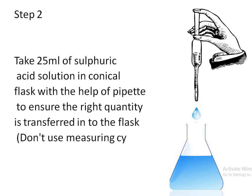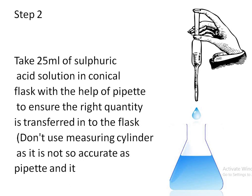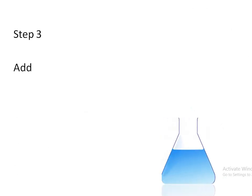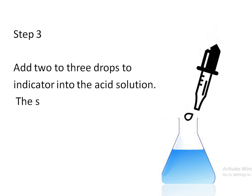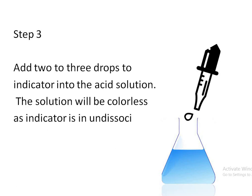Do not use measuring cylinders because they are not as accurate as a pipette and may lead to errors. Step 3: add 2 to 3 drops of indicator into the acid solution. The solution will be colorless as the indicator is in undissociated form.